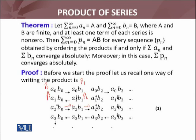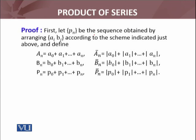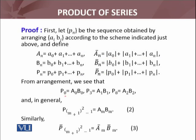Let p_n be the sequence obtained by arranging a_i*b_j according to the scheme just described. Let A_n be the n-th partial sum of summation a_n, and Ā_n be the partial sum of the absolute terms. Similarly define B_n and P_n. P_n is the sequence of partial sums of the product of the two series, and P̄_n is the sequence of partial sums of the product series with absolute values, showing absolute convergence.